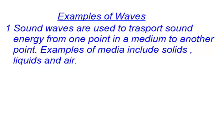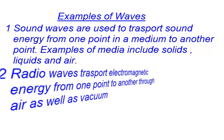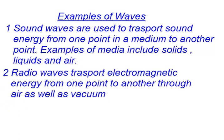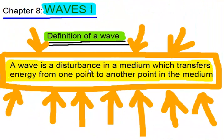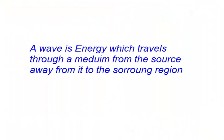Similarly, radio waves transport electromagnetic wave energy from a transmitter to the receiver — air, or what we commonly refer to as the radio — and this wave travels through air or even a vacuum. That is why in our definition, it is a disturbance which occurs in a medium, and this disturbance is responsible for transporting energy from one point, which is the source, to another point in the same medium. So when we talk of a wave, we must mention energy and the medium through which the energy travels.